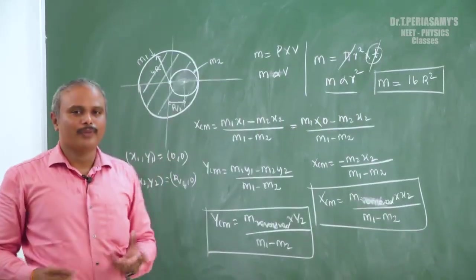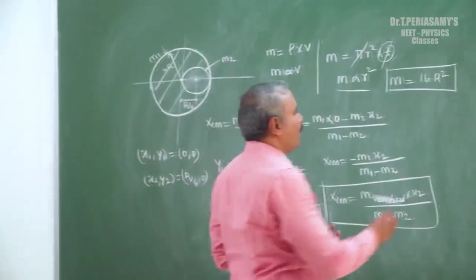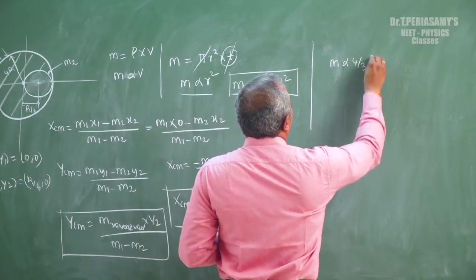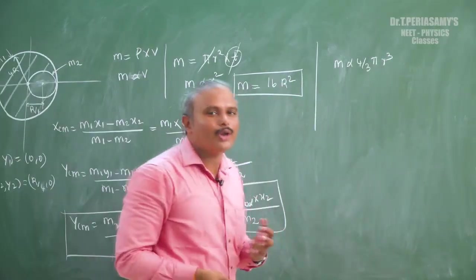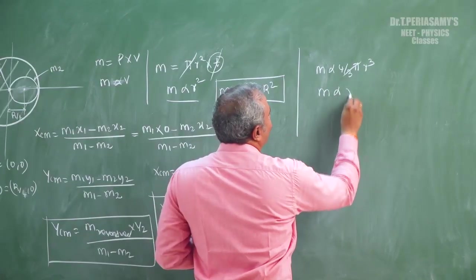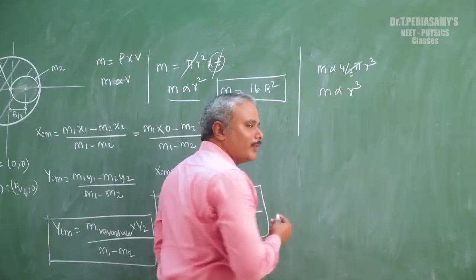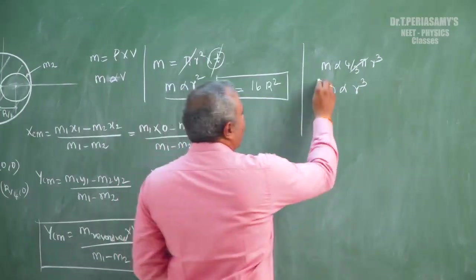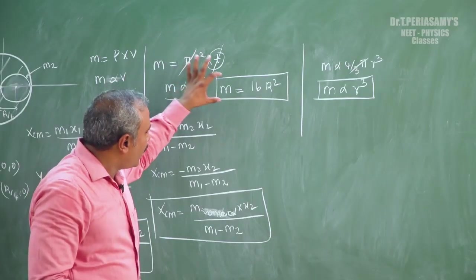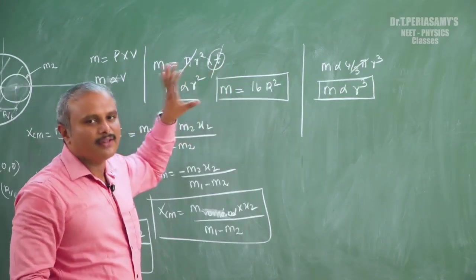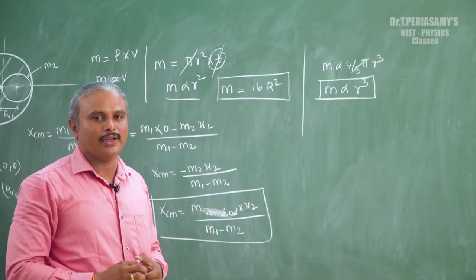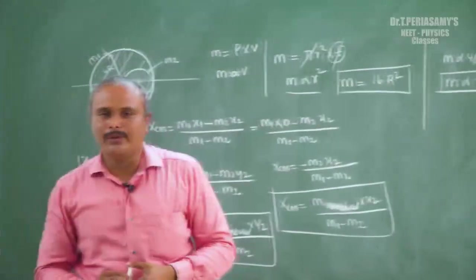Now let's look at the sphere. For a sphere, volume equals 4 by 3 pi r cubed. Since pi and the constant are fixed, mass is proportional to r cubed. We now know area mass density, linear mass density, and volume mass density. We will solve a complete truncated body problem in the next class.